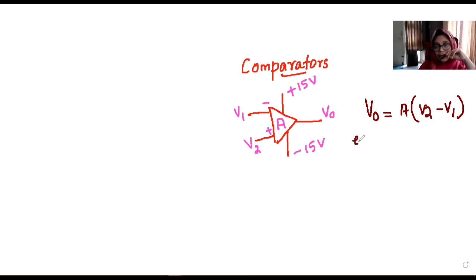Now, let's take an example. We are assuming V2 is equal to 5V, V1 is equal to 3V. For an ideal op-amp, the amplification factor or gain is 10 raised to 6. It is a very huge value.